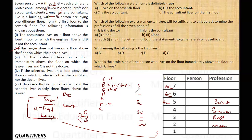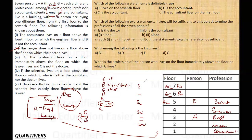F is a scientist — I already have that. A is a professor — that is also confirmed. Now, the doctor must live above the lawyer. Given our arrangement, the doctor cannot be in the lawyer's position or below, so the doctor must be in one of the floors above. The remaining slot below the lawyer is left for the consultant only.